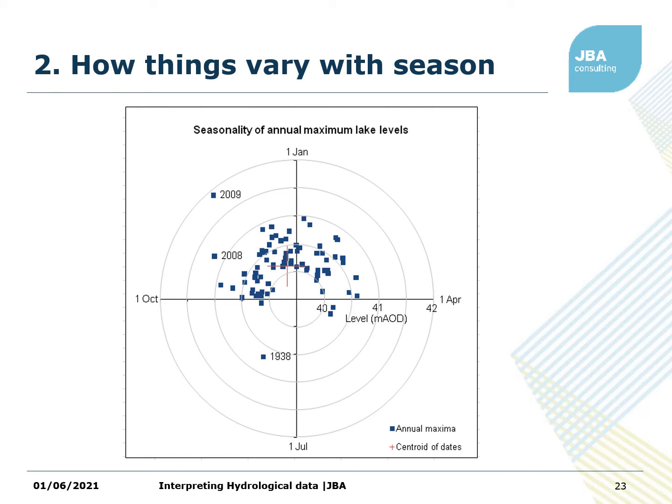The other thing your data might tell you is how things vary with season. Thinking back to environmental flows, what's happening in summer compared to winter — if there's more water available in winter, you might be allowed to do something different. This plot has months of the year on the outside and the distance from the centre representing magnitude. This shows maximum lake levels in Windermere in Cumbria. Pretty much every year the annual maximum lake level occurs in winter between October and April. But there's a very notable exception in 1938 where the highest annual maximum level is in summer — reminding us that just because something is more likely at a certain time of year doesn't mean it can never happen at another time.